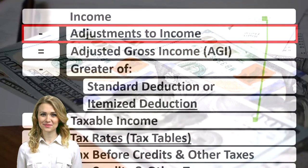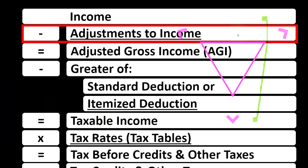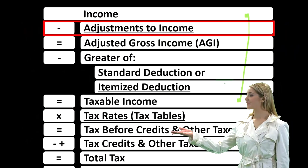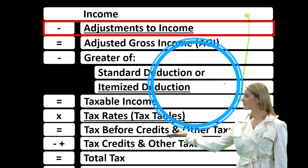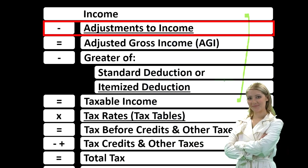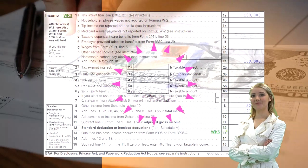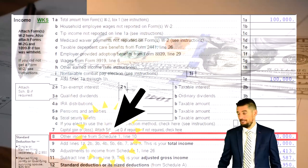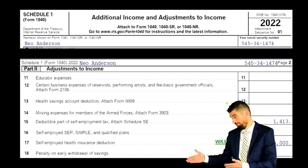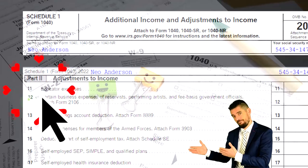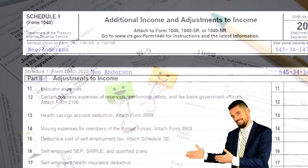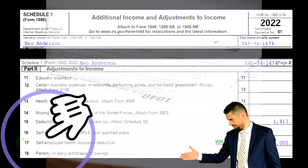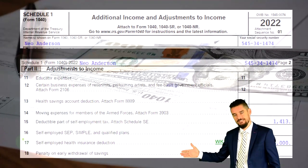Also remember that above-the-line deductions — the adjustments to income — do not have the same limitation as itemized deductions, which must clear a threshold like the standard deduction to get a benefit. We're looking at the first page of the tax form, focused on line eight, other income from Schedule 1. On Schedule 1, Part 2, we're focused on line 17, which is the self-employed health insurance deduction.